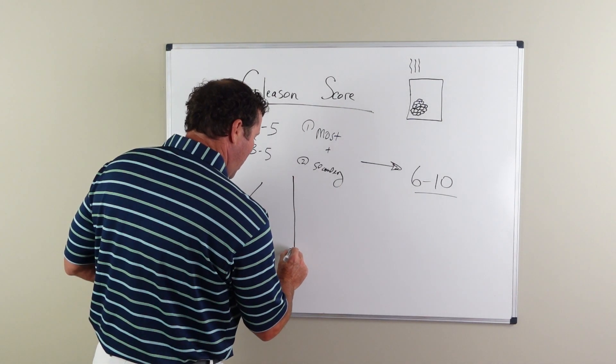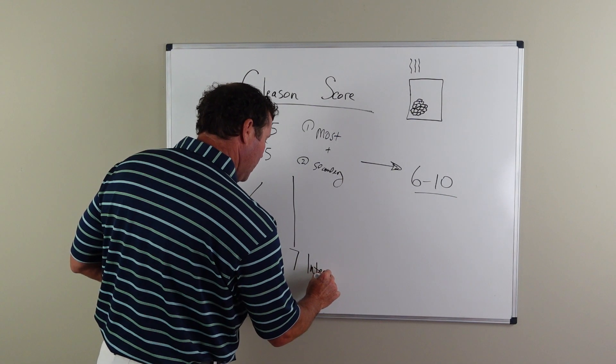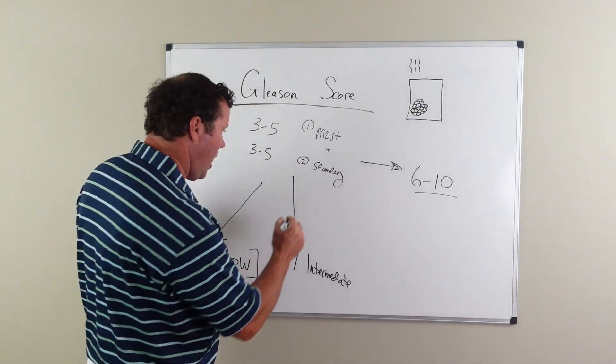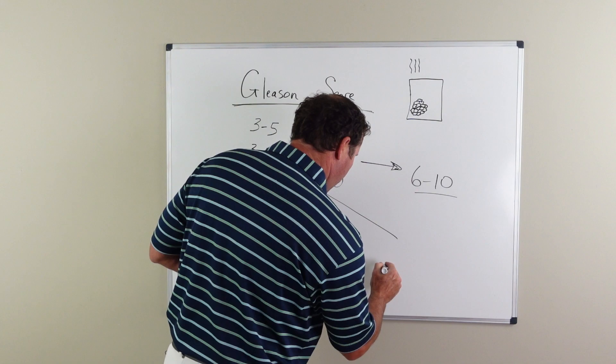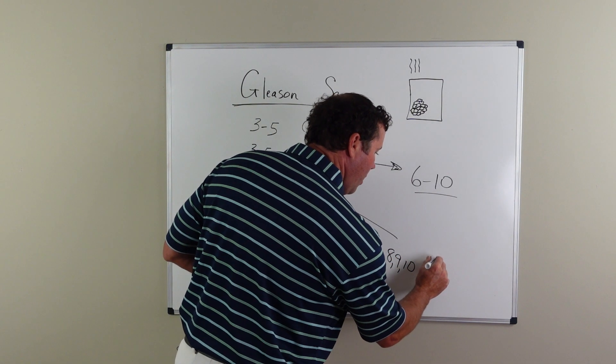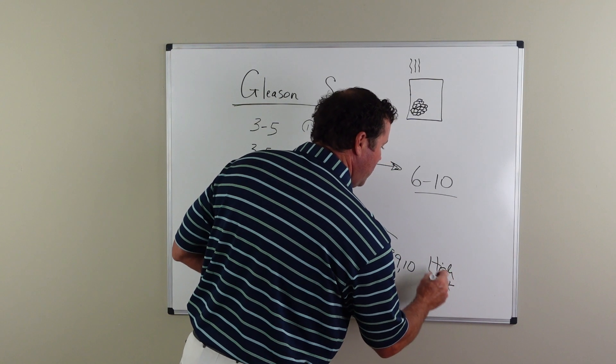Gleason seven cancers are what are called intermediate prostate cancers or intermediate risk prostate cancers, and then Gleason scores that are eight, nine, and ten are what are called high-risk prostate cancers.